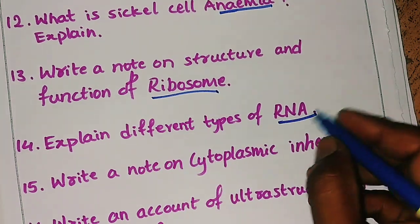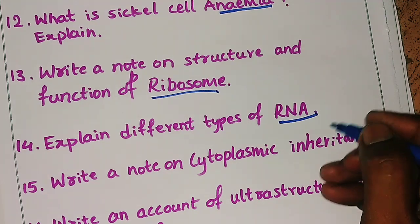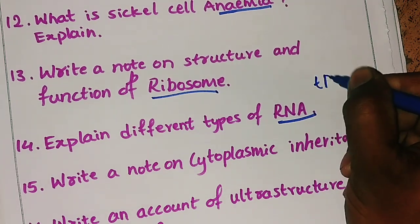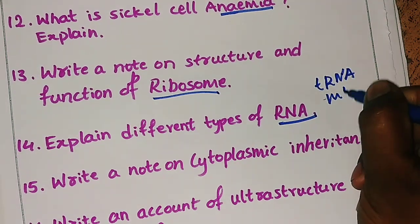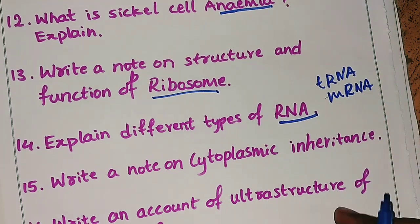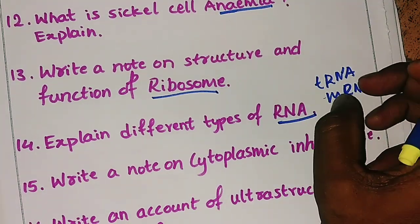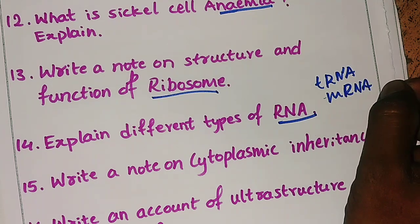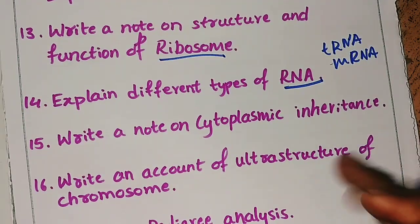The fourteenth question is: explain the different types of RNA — tRNA, mRNA, and others. This question may also be asked in two marks. Write the types and explain each in two lines. The fifteenth question is: write a note on cytoplasmic inheritance.